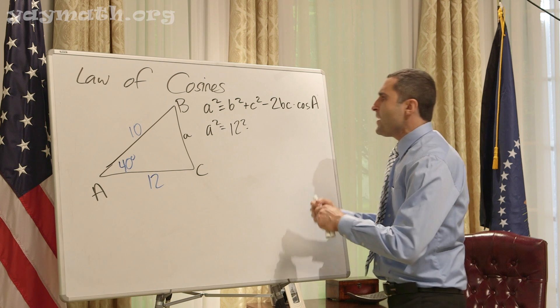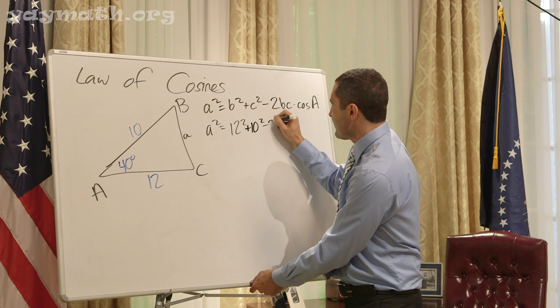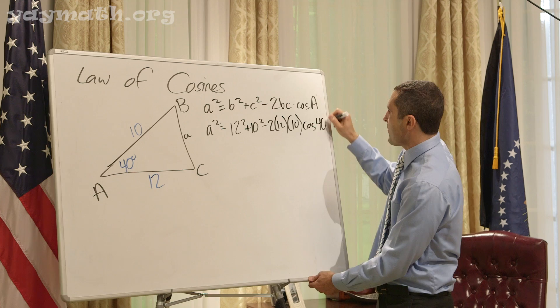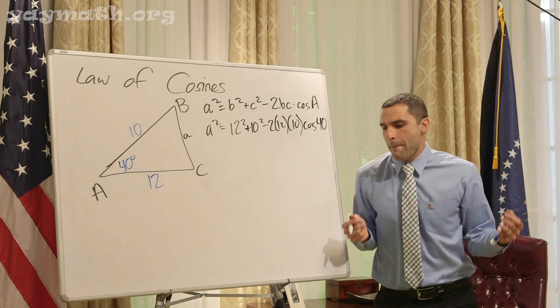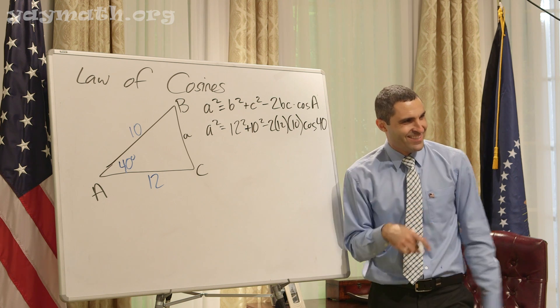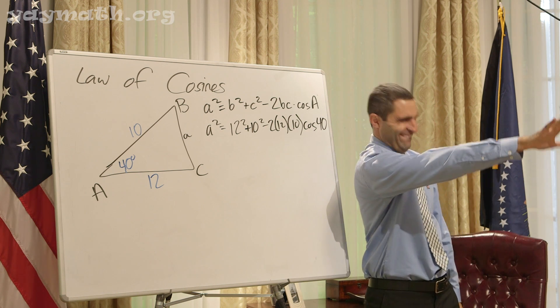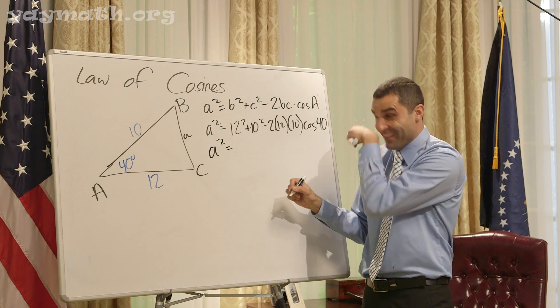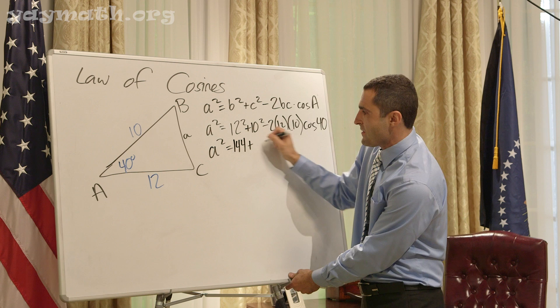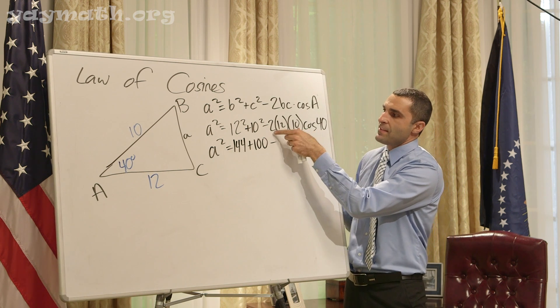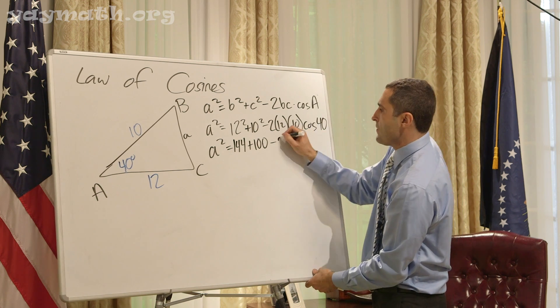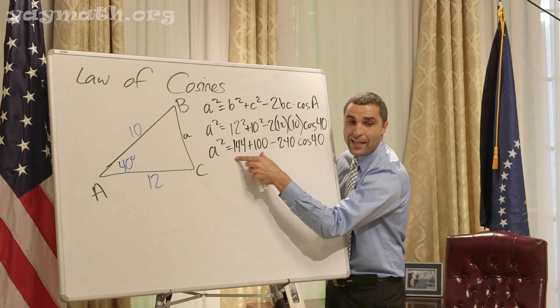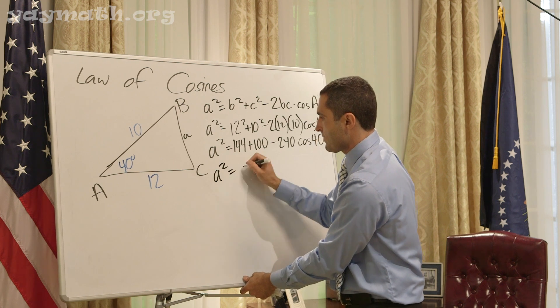Let's simplify. a² = 144 + 100... Two times 10 is 20 times 12 is 240 cosine of 40. Should we add these two? We shall. What is it? 244.